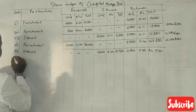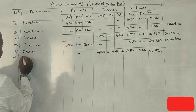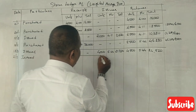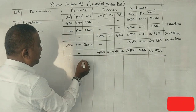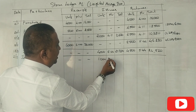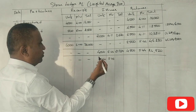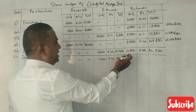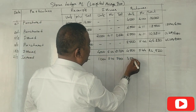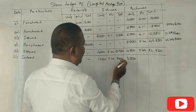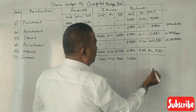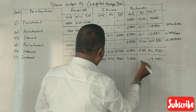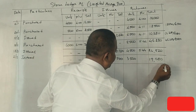On 2nd of March, again we have issued 1,000 units. No need to think about the price — we issue at 5.44 only. This becomes 5,440. So from 4,500 minus 1,000 we have 3,500 units remaining. Balance value is 24,520 minus 5,440 equals 19,080.